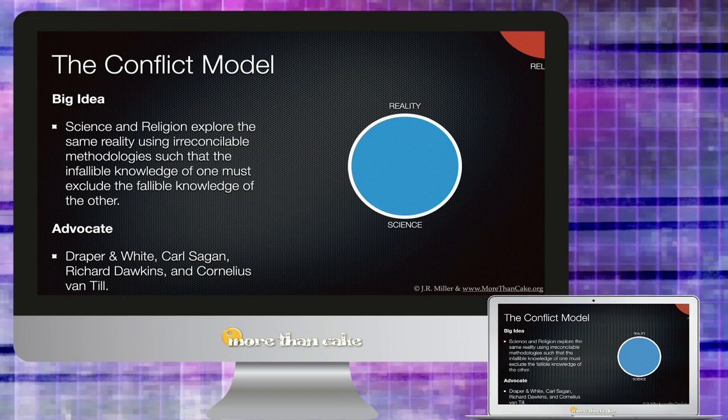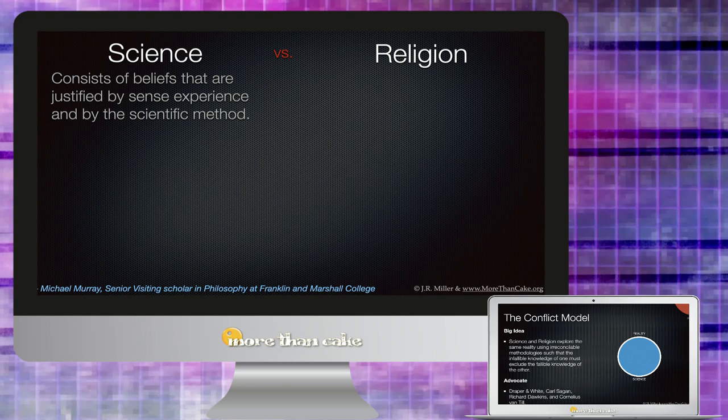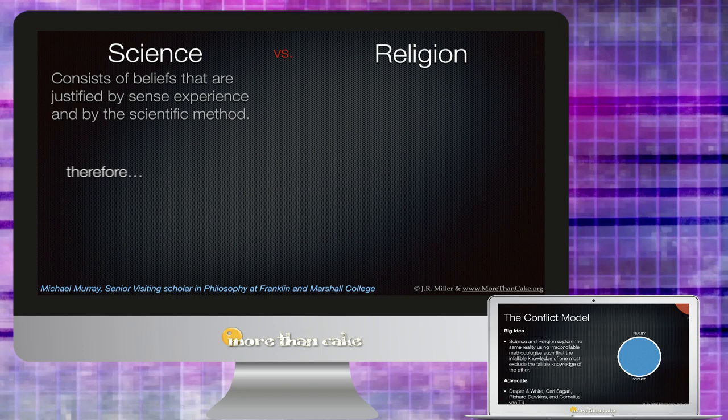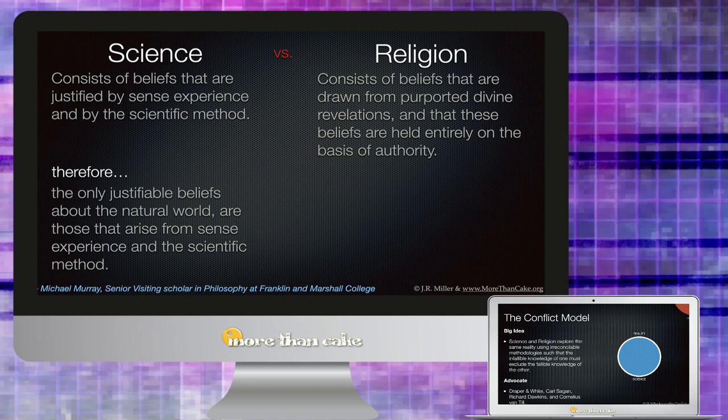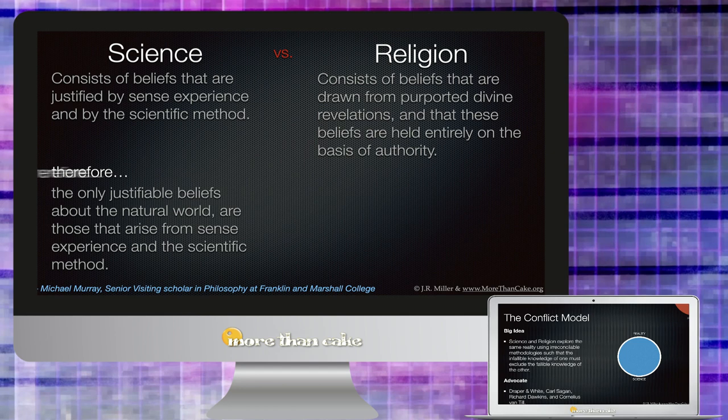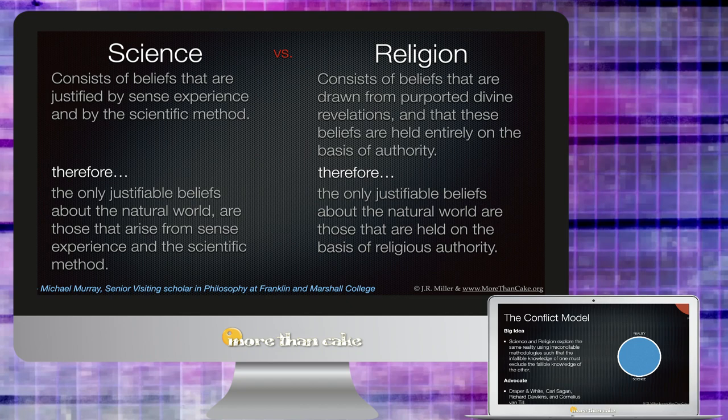Given this inherent conflict, Michael Murray gives a pretty good analysis here of this potential conflict. He says science consists of beliefs that are justified by sense experience and by the scientific method. Therefore, the only justifiable beliefs about the natural world are those that arise from sense experience and the scientific method. In contrast, he says that religion consists of beliefs that are drawn from purported divine revelations and that these beliefs are held entirely on the basis of authority. Therefore, the only justifiable beliefs about the natural world are those that are held on the basis of religious authority. So you can see here where this conflict lies.